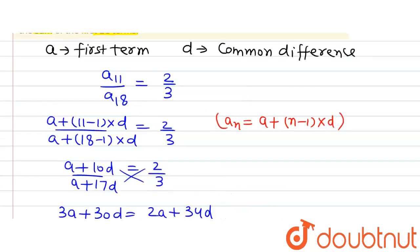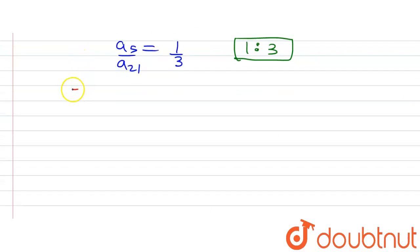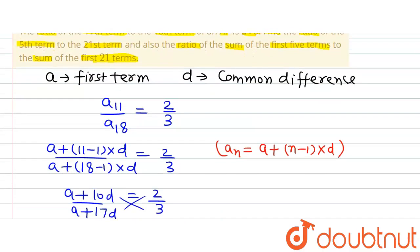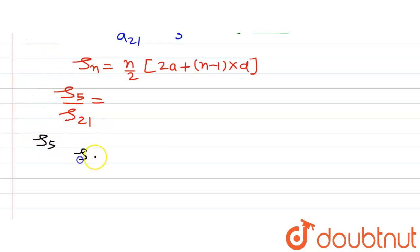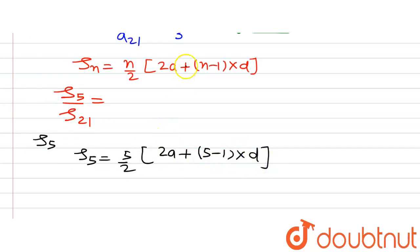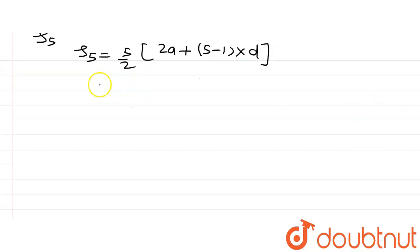This is the answer to the first part. Now for the second part about the sum, the formula for the sum of N terms of an AP is: S_N = N/2 × (2A + (N - 1)D). For the sum of first 5 terms, putting N = 5, we get S5 = 5/2 × (2A + 4D).